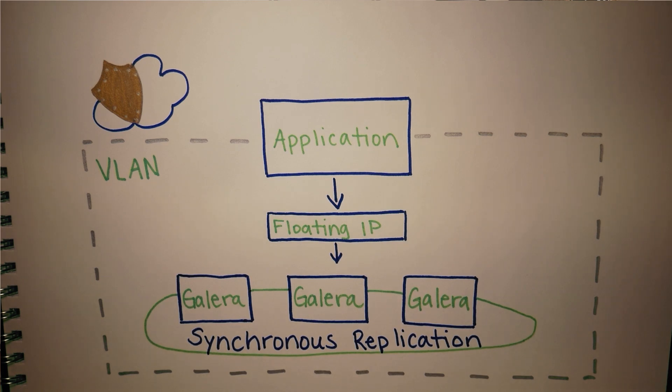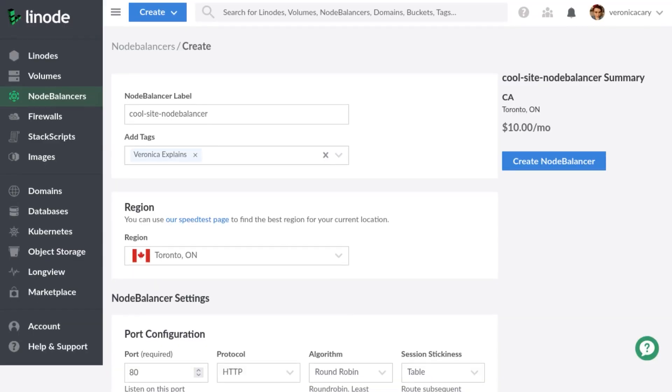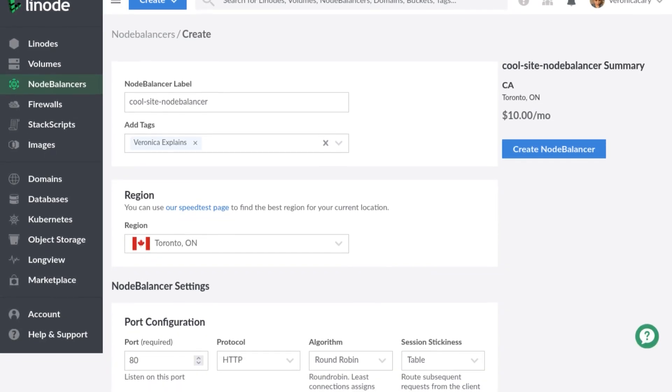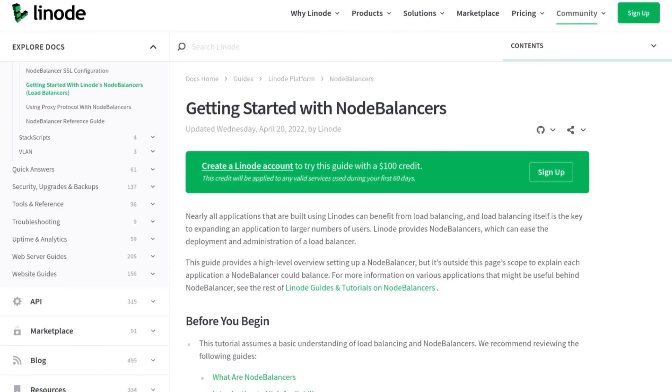Now we have a database layer that's considered highly available. Our planned cluster is now much more resilient than a single production database instance would be. Taking a look at our diagram, there's another layer here which could be improved: the application layer. Linode has powerful tools here as well, in the form of Linode NodeBalancers. If you'd like to learn more about Linode NodeBalancers, one of the easiest ways is to dive into the docs and try it for yourself.